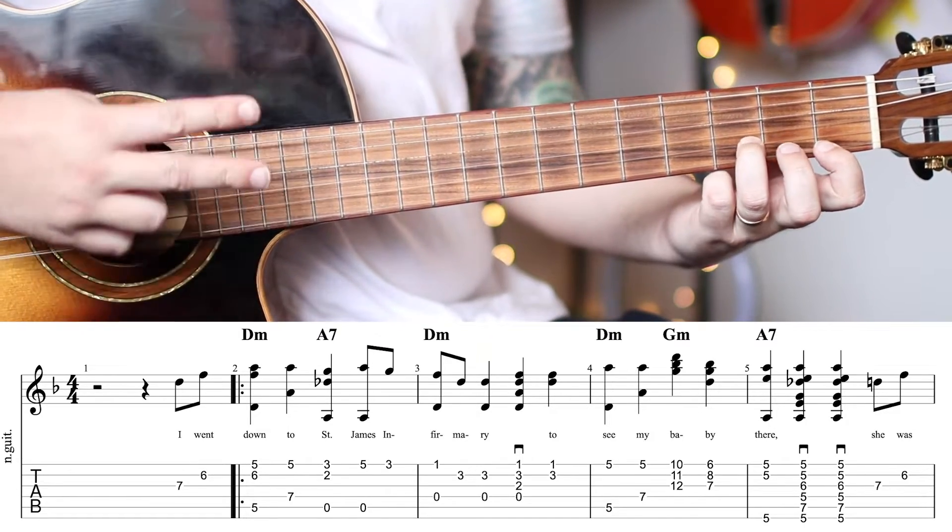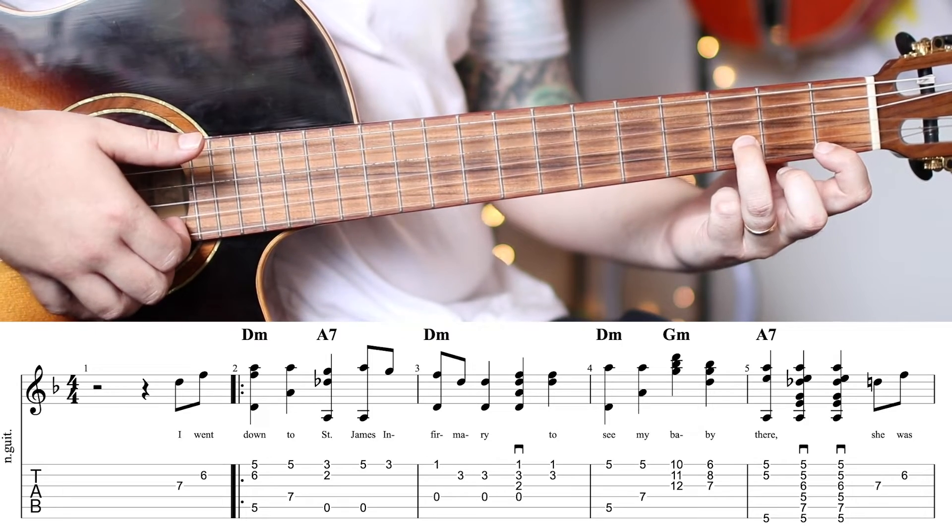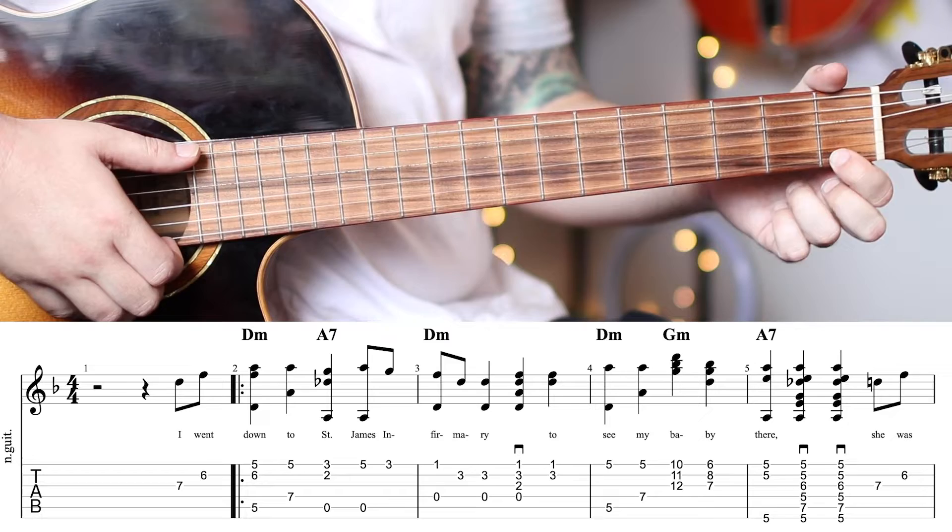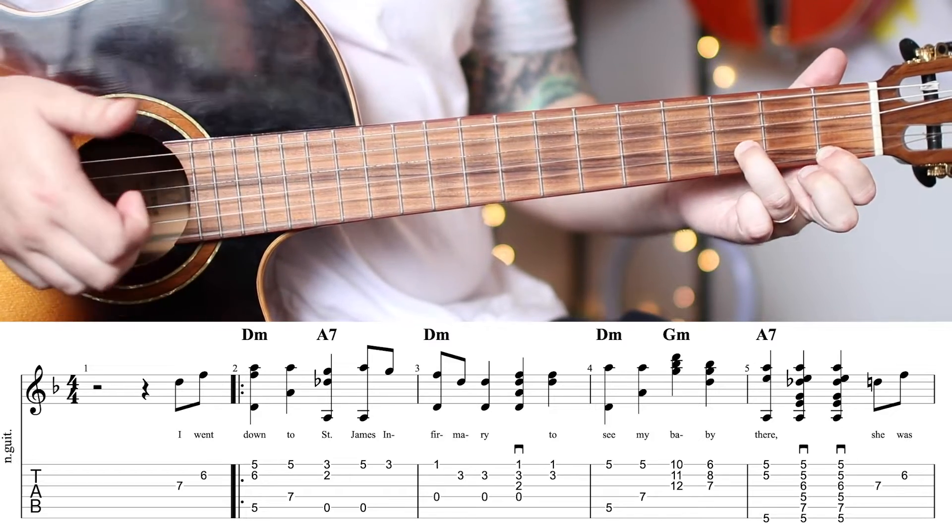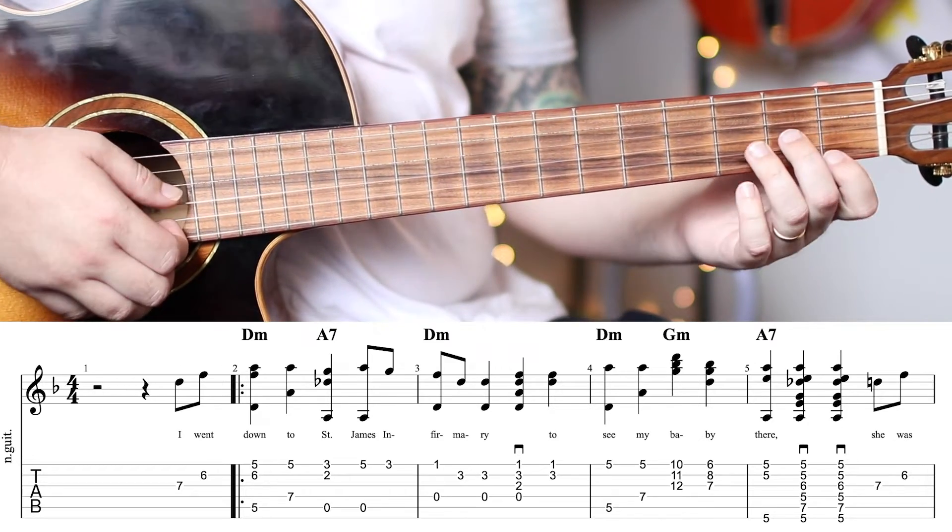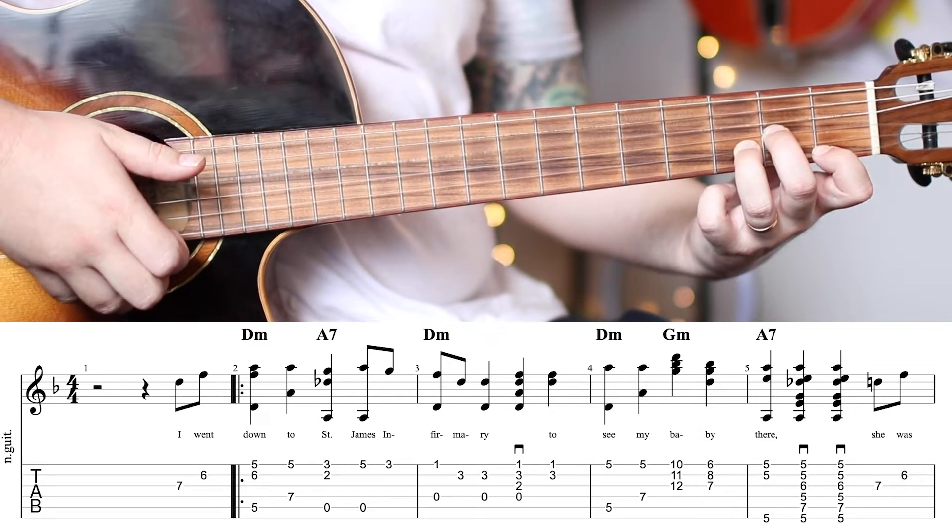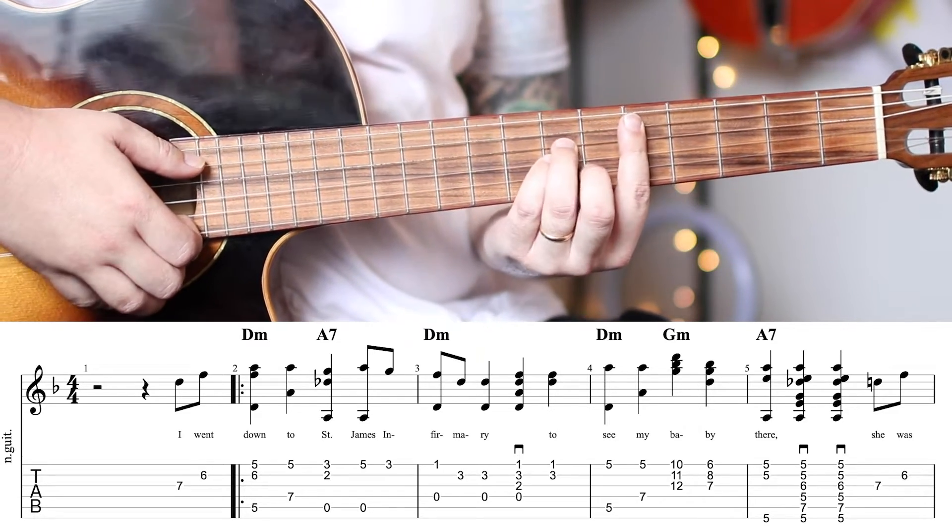On the 4th beat, you'll use these two fingers again to pinch the E and the B string. The melody is just this F note, but that double stop is nice. Back up to this D shape here.